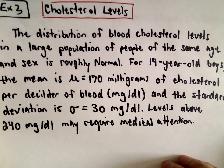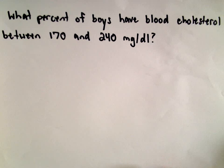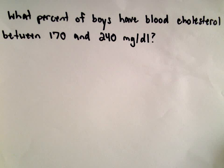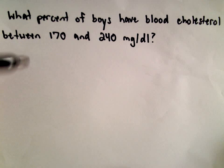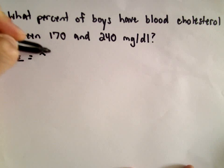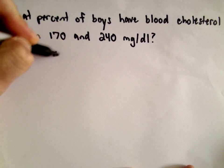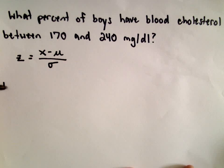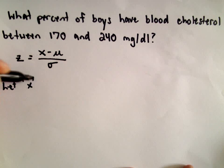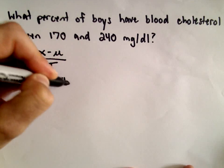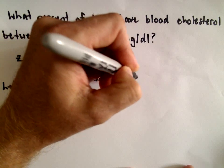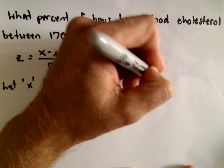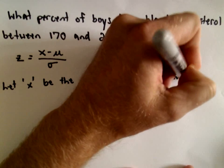What we want to find out is what percent of boys have cholesterol between 170 and 240 milligrams per deciliter. We're going to use the z-score, where z equals x minus mu divided by sigma. We let x be the amount of cholesterol in the blood.